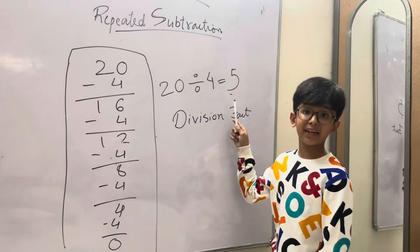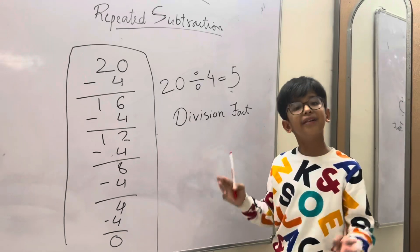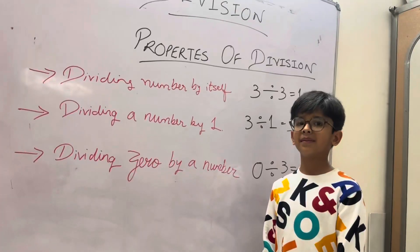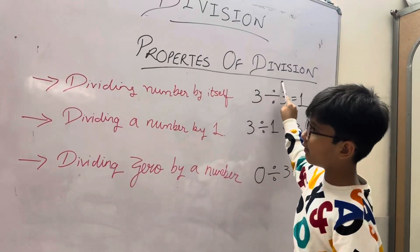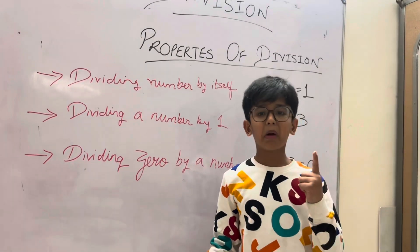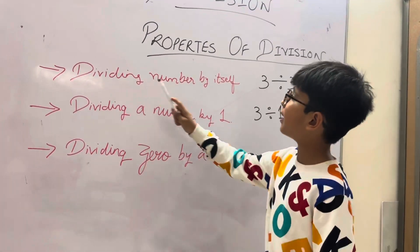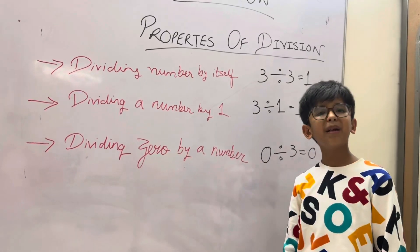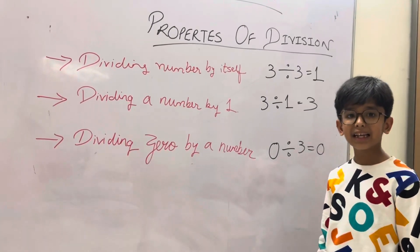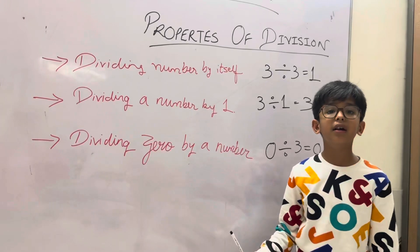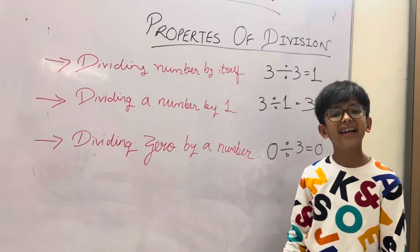Properties of division. So first property is dividing number by itself. Dividing number by itself meaning is any number other than 0 divided by itself gives the quotient as 1.